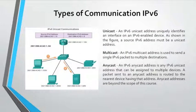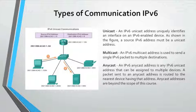Types of IPv6 communications: IPv6 uses unicast, which is used to uniquely identify an interface on an IPv6-enabled device; a source IPv6 address must be a unicast address. Multicast is used to send a single IPv6 packet to multiple destinations. Anycast sends a packet to the nearest device having that address; anycast addresses are beyond the scope of this course. Unlike IPv4, IPv6 does not have a broadcast address; however, there is an IPv6 all-nodes multicast address that essentially gives the same result.